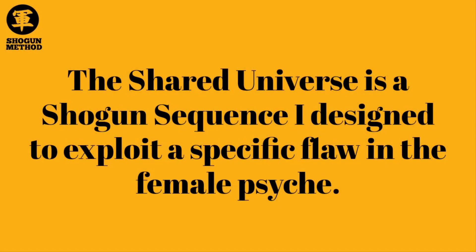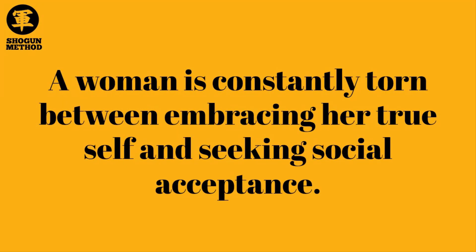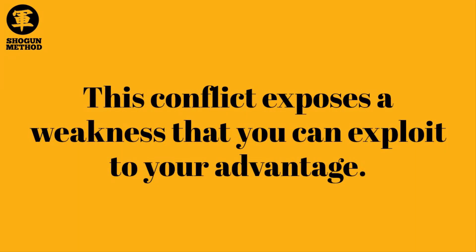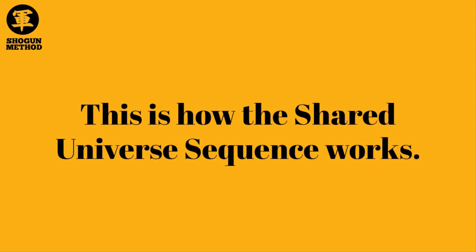The Shared Universe is a Shogun Sequence designed to exploit a specific flaw in the female psyche. A woman is constantly torn between embracing her true self and seeking social acceptance. This conflict exposes a weakness that you can exploit to your advantage. This is how the Shared Universe Sequence works.